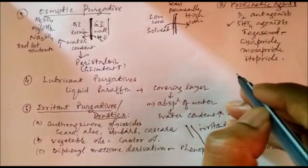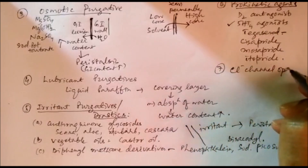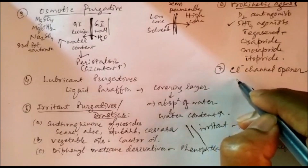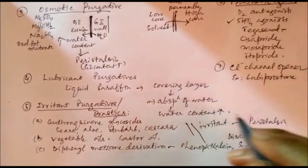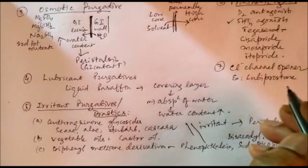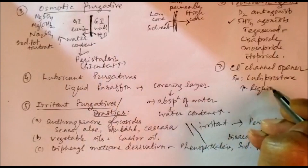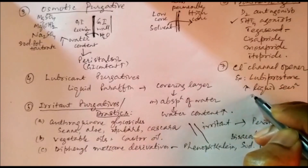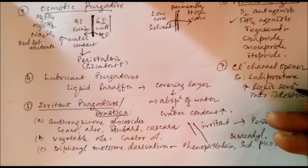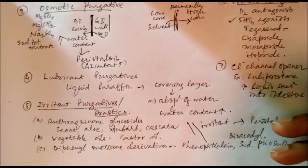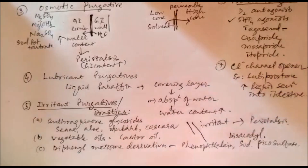The seventh group is chloride channel openers. The example is lubiprostone. Lubiprostone, by opening the chloride channel, increases liquid secretion into the intestine, which causes purgative action. These are all the drugs used for constipation. Thank you so much.